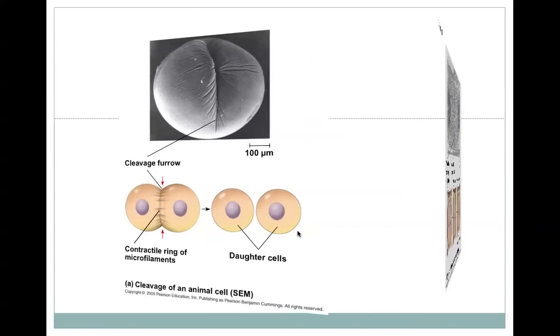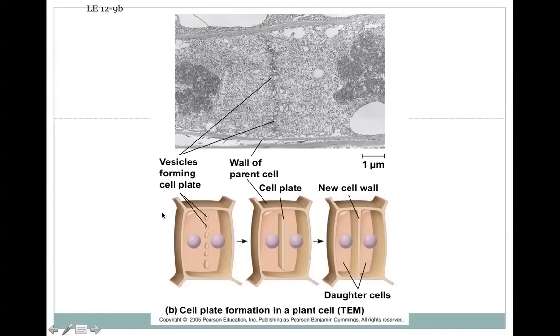In plant cells, this occurs slightly differently. Remember, plant cells have a cell wall, so you can't just squeeze them and have them break into two. They have to form a new cell wall between the two daughter cells. And that is formed by these vesicles lining up in the center and forming what's called this cell plate, which is just an early cell wall, which then fuses with the existing cell wall and divides the new cell into the two daughter cells.